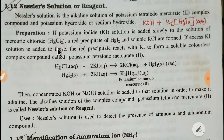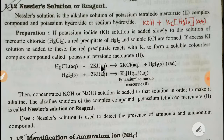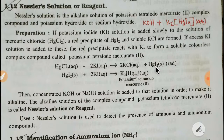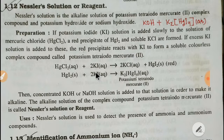How to prepare Nessler's solution or reagent: if you add potassium iodide slowly to a solution of mercury chloride, a red precipitate of mercuric iodide and soluble potassium chloride is formed.